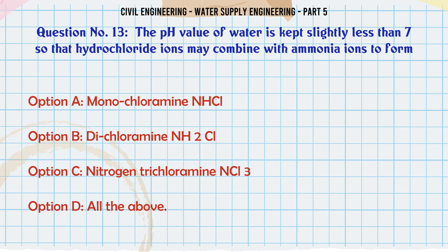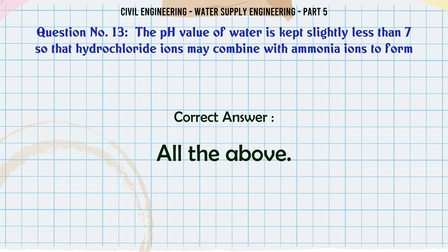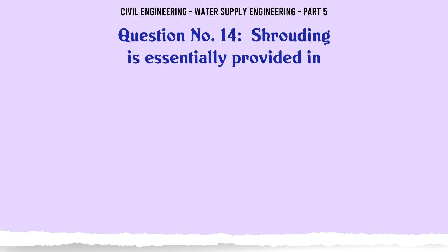The pH value of water is kept slightly less than 7 so that hydrochloride ions may combine with ammonia ions to form: A. Monochloramine (NHCl), B. Chloramine (NH₂Cl), C. Nitrogen trichloride (NCl₃), D. All the above. The correct answer is All the above.